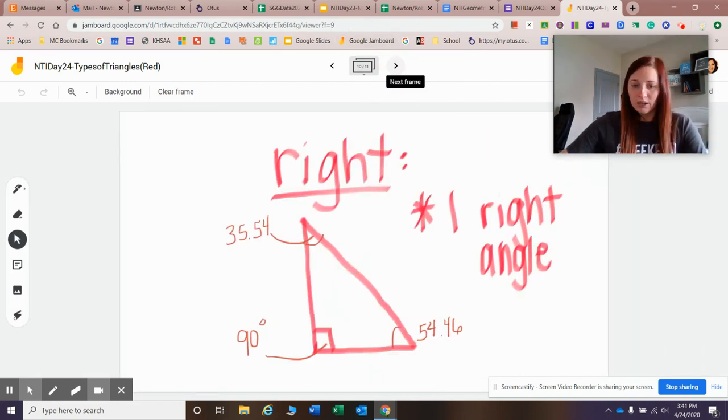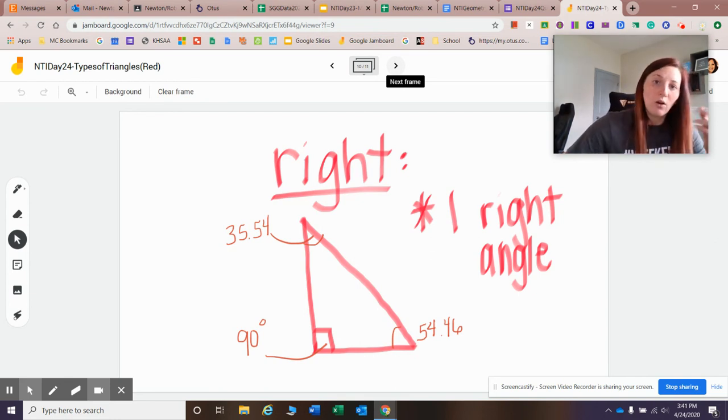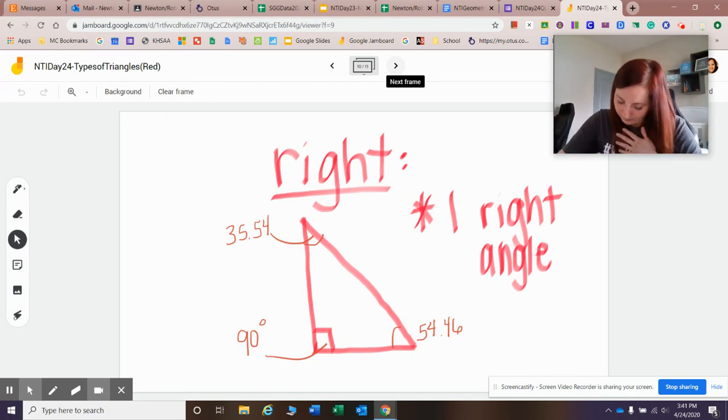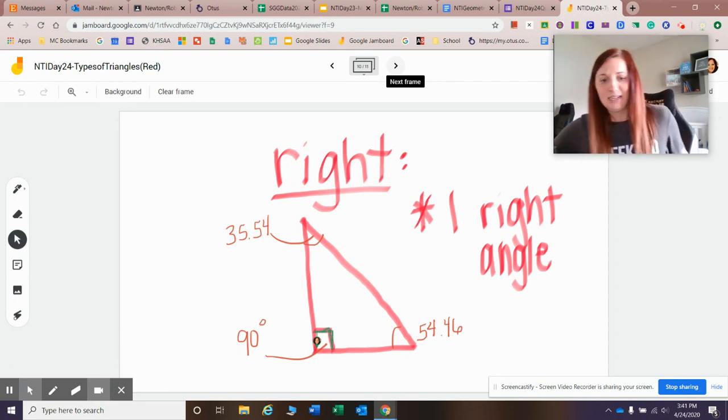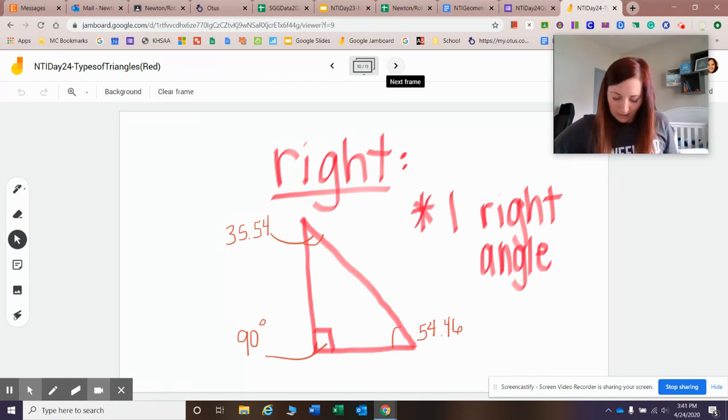And my last example that we're going to look at is a right angle. This is a really common type of triangle. So a right triangle, and it usually does have this little box, which indicates that it is 90 degrees and that it's a right angle or a right triangle. So here's an example. If this was 90 degrees, then I know that this one's an acute angle because it's 35.54. And that this one's also an acute angle because it's 54.46. And I know acute angle is anything less than 90. So you just need to know that a right triangle has one right angle.